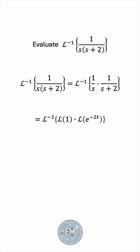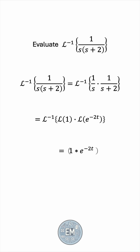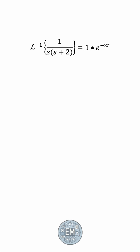We have a product of transforms, so this is the transform of the special product between the two functions — the convolution. The Laplace and inverse Laplace operators cancel out, leaving us with the convolution between 1 and e to the negative 2t. So we'll have to solve this using the integral definition we saw earlier.